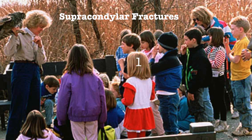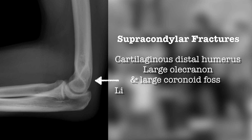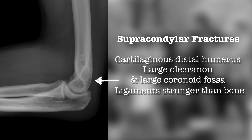Supracondylar fractures are a common fracture of childhood and are relatively rare in adults. This fracture is mostly a fracture of childhood because of a weak point that exists in the elbow as a result of multiple factors. These factors include the cartilaginous nature of the distal humerus, the larger olecranon and coronoid fossa, and stronger ligaments than bones.